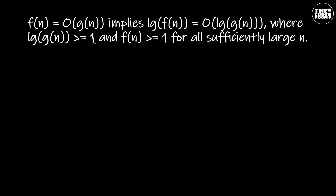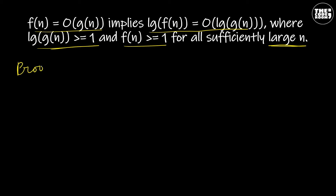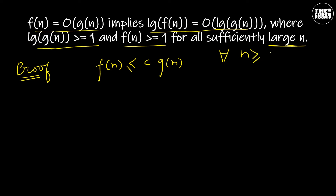Our next property states that if a function f(n) is the Big O of g(n), then it implies that log f(n) is the Big O of log g(n), where log g(n) is greater than or equal to 1 and f(n) is greater than or equal to 1 for sufficiently large n. Remember, large n is a key term here because this property holds true only for large values of n. Now let us prove this property. By the definition of Big O notation, we have f(n) ≤ c·g(n) for some values of n greater than or equal to n₀.